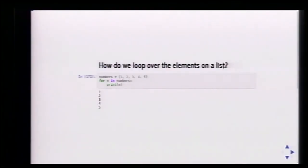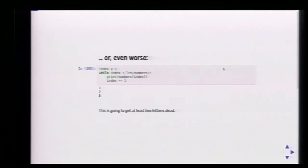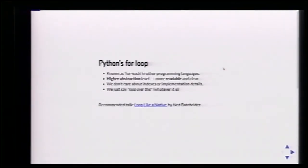We all know how we loop over a list in Python. We say 'for thing in whatever, do thing.' That's way better than generating all the indexes and accessing each element by index — and even worse, incrementing the index by hand. We use the Python for loop, which in other languages is a foreach, giving us higher instruction level, making the code more readable and clearer.